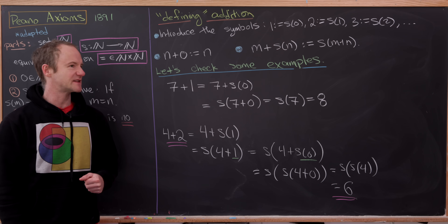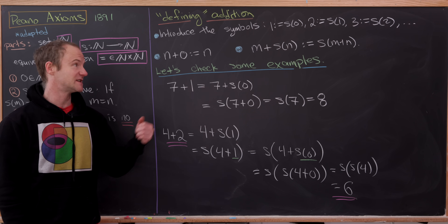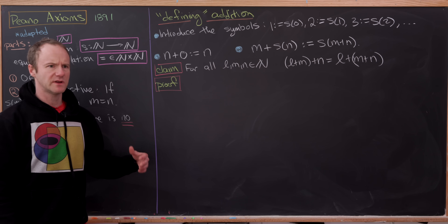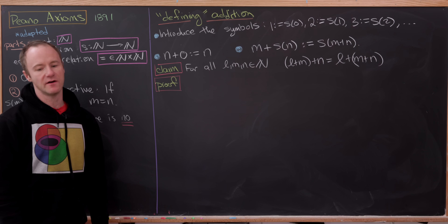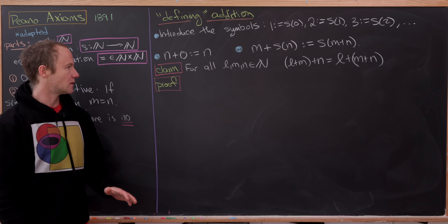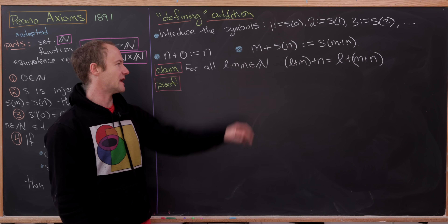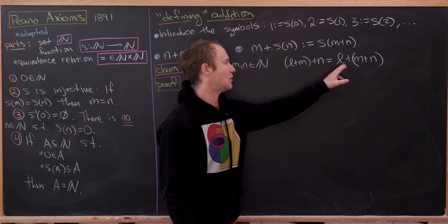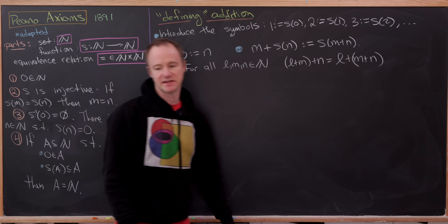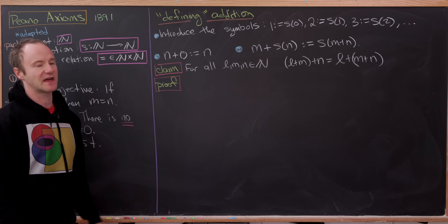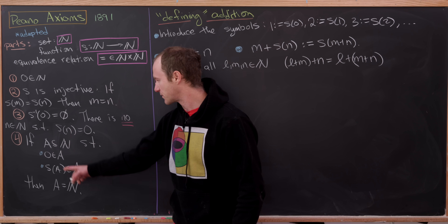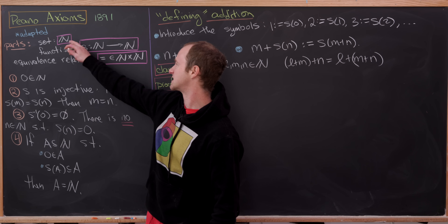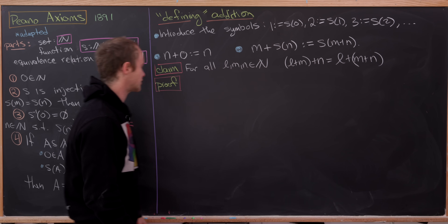Now let's check that some nice properties of this operation hold. First, we'll prove the associative rule of addition: for all L, M, and N in N, (L plus M) plus N equals L plus (M plus N). We'll prove this using the inductive property — that fourth axiom. We need a set, a function, and an equivalence relation to satisfy it.